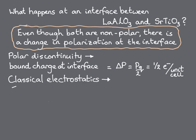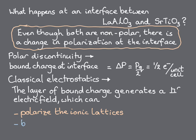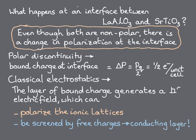Classical electrostatics tells us that the layer of bound charge generates an electric field perpendicular to the interface. This electric field can have the effect of polarizing the lattices of ions, pushing the anions and cations in opposite directions along the field direction. Or alternatively, if there are free charges available, either from impurities or by creating electron-hole pairs across the band gap, these free charges can move to the interface and screen the bound charge, causing a conducting layer at the interface.